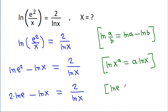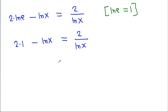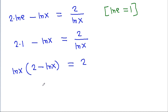Since ln(e) equals 1, this simplifies to 2 times 1 minus ln(x) equals 2 divided by ln(x). Cross-multiplying gives ln(x) times (2 minus ln(x)) equals 2, which expands to 2·ln(x) minus (ln(x))² equals 2.